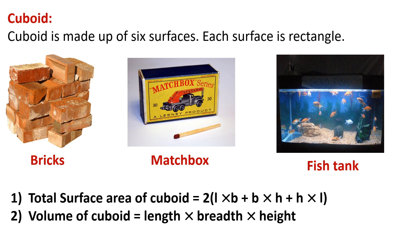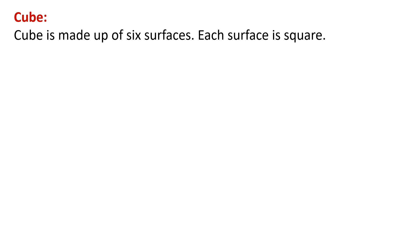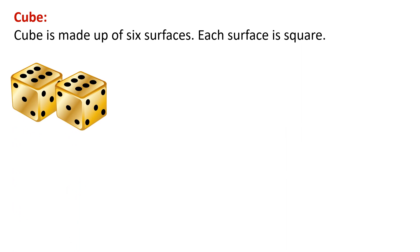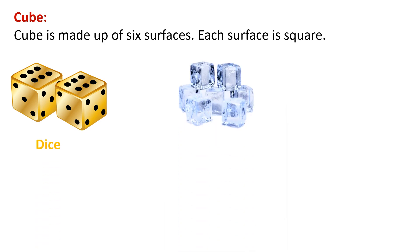The formula for volume of cuboid is length × breadth × height. Now, a cube is also made up of six surfaces, but each surface is a square — unlike a cuboid where each surface is a rectangle. An example of a cube is a dice. You can see all six faces are in a square shape.